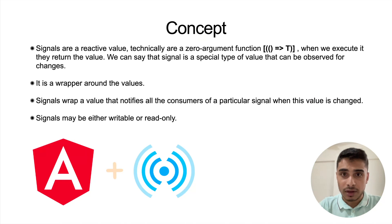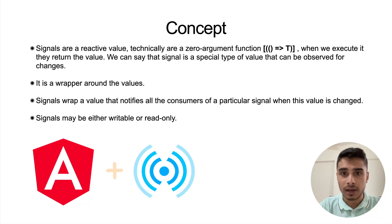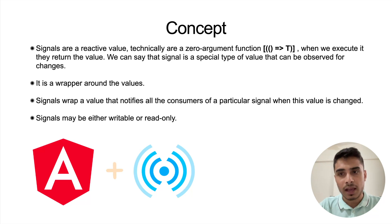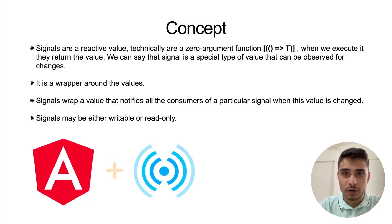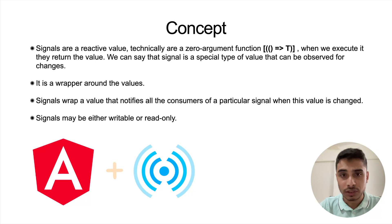First, an introduction of the signal concept in Angular. In general, the signal concept is not new — it was present in Vue.js as a reactivity functionality. In Angular it is relatively new. Technically, signals are zero-argument functions and when you execute that function it returns some value. Signals are a special type that can be observed for a value — a wrapper that contains a value inside it and notifies the consumers of that signal when the value is changing.